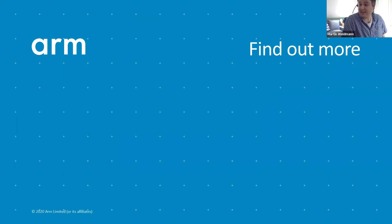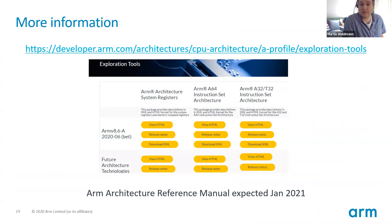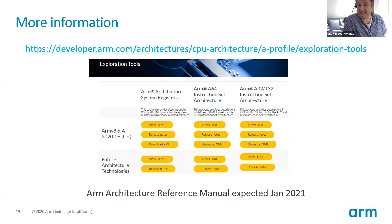So those are the extensions we're introducing as part of the 2020 updates to the architecture. We will be making the register XML and instruction set XML available on ARM's website in the near future. At the time of the screenshot it was still 8.6 rather than 8.7, but that should be updated fairly soon. We also expect an updated architecture reference manual in the first quarter of next year, hopefully in January. I hope you found that interesting and useful, and I will be online for a bit longer to take questions.